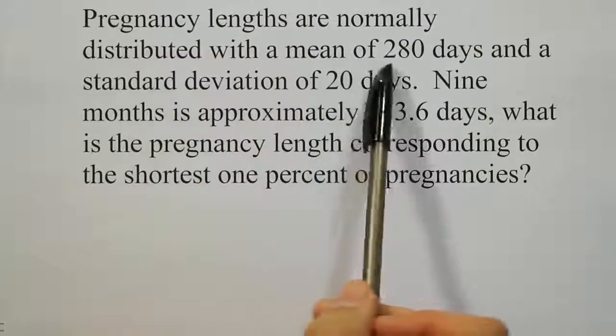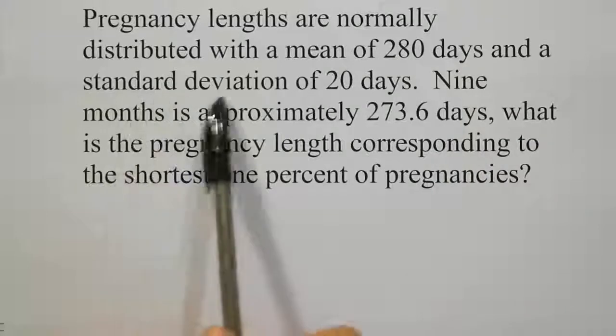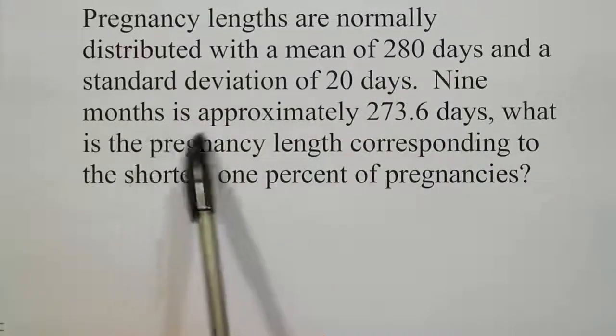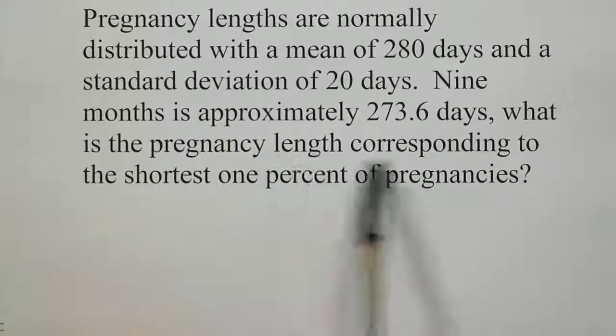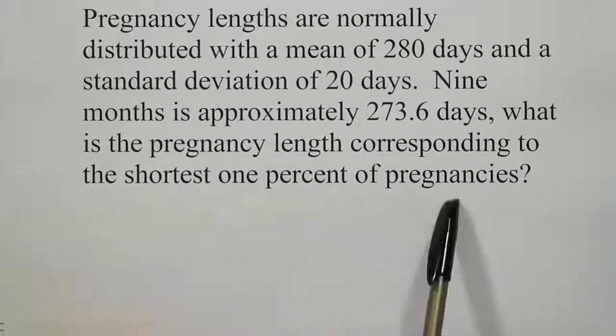Pregnancy lengths are normally distributed with a mean of 280 days and a standard deviation of 20 days. Nine months is approximately 273.6 days. What is the pregnancy length corresponding to the shortest 1% of pregnancies?